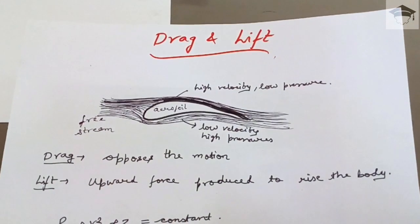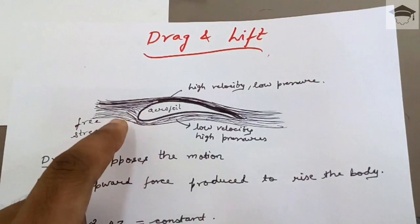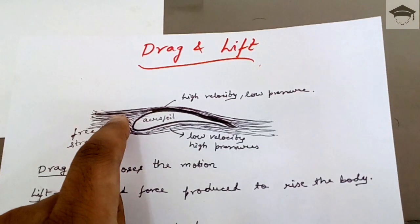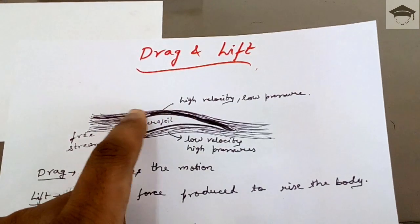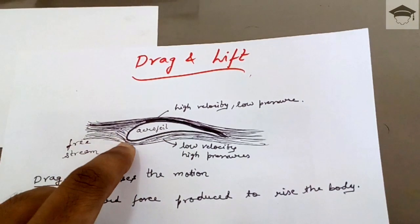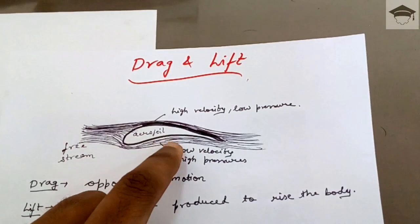In comparison to velocity downward, because here retardation is more, so from here to here the particle velocity is low. Now from Bernoulli's equation we know that if pressure head rises, velocity head decreases.